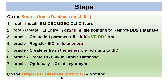At the target DB2 database on host db2, you don't have to do anything — everything is done on the source Oracle database server. To summarize: install IBM DB2 ODBC CLI drivers, create CLI entry, create init parameter file, register SID in listener.ora, create entry in tnsnames.ora, then create the DB link and optionally a synonym.